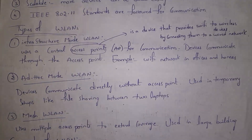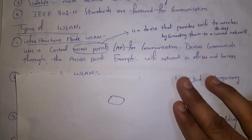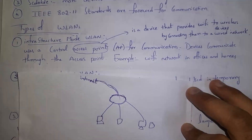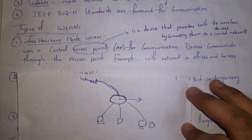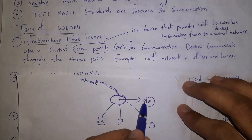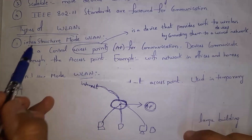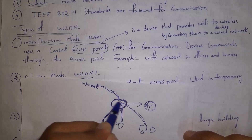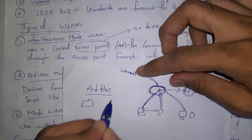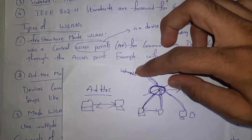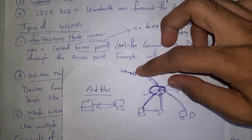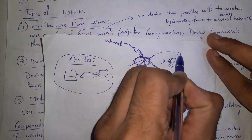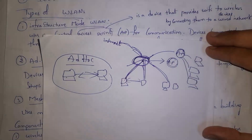Next I will explain types of WLAN. The first is infrastructure mode — all devices connect to a router wirelessly to access the internet, and inside the router there is an access point where devices connect to the network. In ad hoc mode, there is no access point; devices communicate directly with each other. In mesh WLAN, there are multiple access points that exchange network coverage to cover a large area.